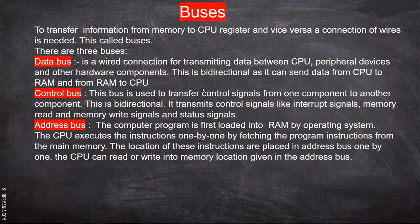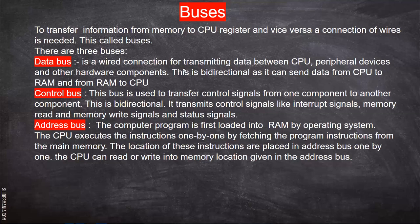Using buses, data is transferred from one unit to another. In a microprocessor, we have many units — arithmetic logic unit, control unit, memory unit, input unit, output unit — and within that there are many registers. All those things need data transfer between each other. For that we use the buses. There are mainly three buses: data bus, control bus, and address bus. The data bus is a wired connection for transmitting data between the CPU, peripheral devices, and other hardware components. It is bidirectional because data has to be transferred from memory to internal registers as well as from registers to memory.